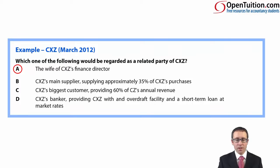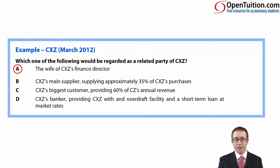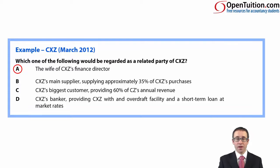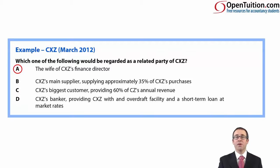Don't be put off by B, C and D. B is a supplier — we'd ignore that straight away; it doesn't matter that they supply 35% of purchases, as that's not about ownership or influence. C is the biggest customer contributing 60% of annual revenue — again, not control in terms of ownership. D is a bank providing an overdraft and loan facility — it doesn't even matter if rates are at or below market rates. They are not a related party because they have no ownership interest, and therefore no control or influence based on directing or participating in the activities.